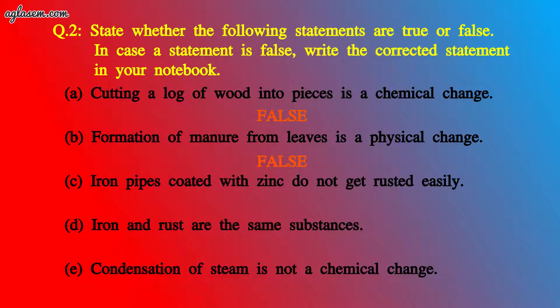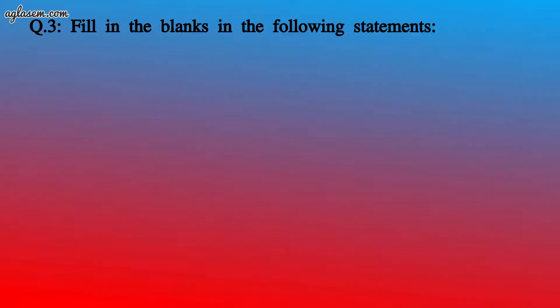C) Iron pipes coated with zinc do not get rusted easily — this statement is true. D) Iron and rust are the same substances — this statement is also true. E) Condensation of steam is not a chemical change — this statement is also true.